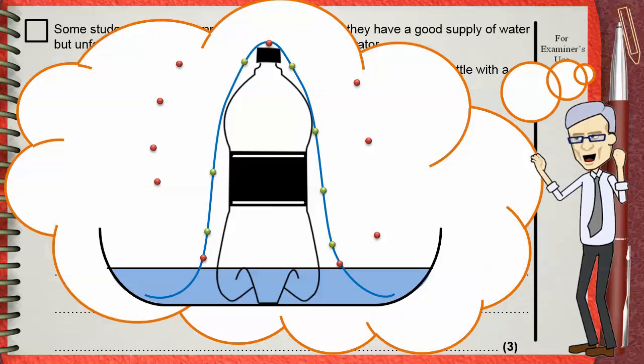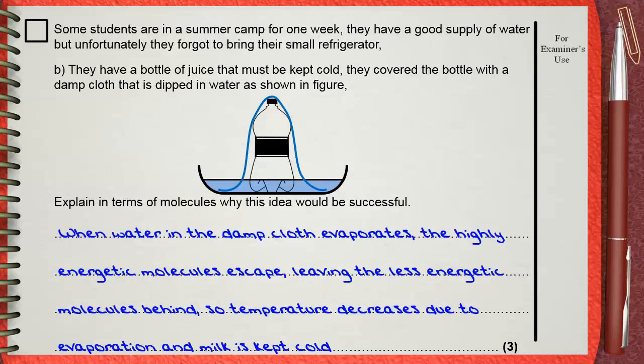Let's answer this. When water in the damp cloth evaporates, the highly energetic molecules escape, leaving the less energetic molecules behind.